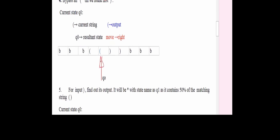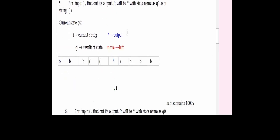Now we are at the next opening brace. For this input opening brace also, we write the output as-is, the resultant state remains Q0, and we move right — we are bypassing everything. Now after moving right we reach the first closing bracket. After finding the closing bracket, we mark it with a star.